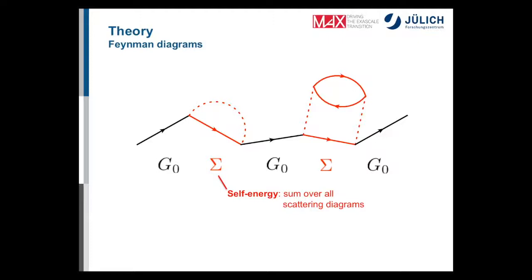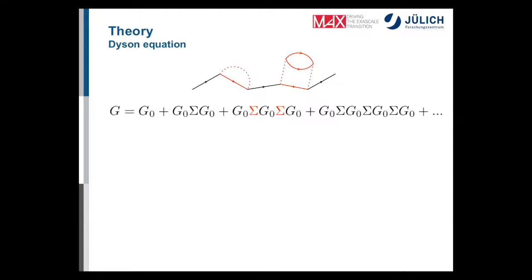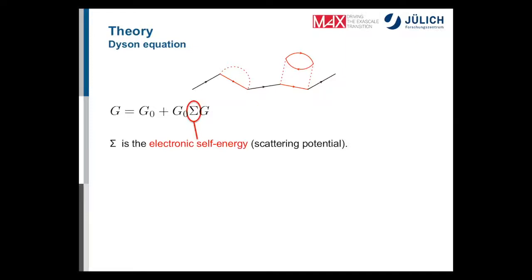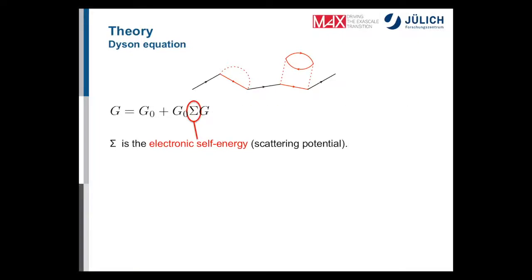All possible paths — none, one, two, three, or more scattering events — can be summed in an infinite series. G (the interacting Green function) starts with G₀, then includes one, two, three scattering events up to infinite order. Factoring out the self-energy Σ and the fully interacting Green function once yields the Dyson equation: G = G₀ + G₀ Σ G.